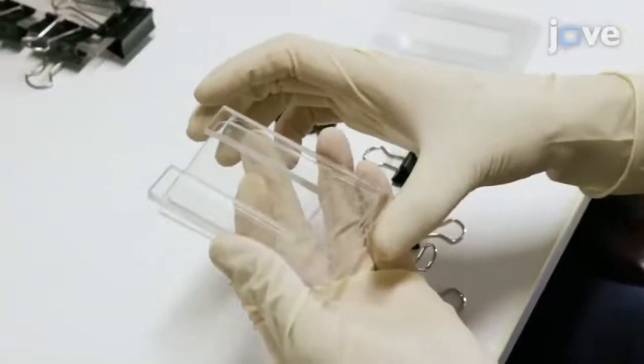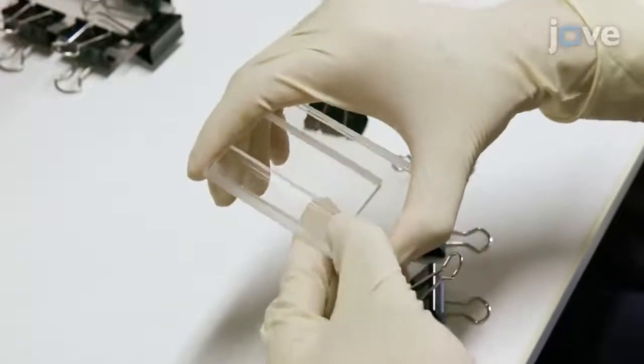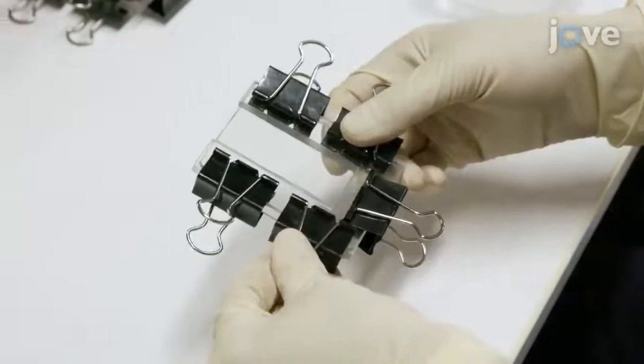Construct the dermal phantom mold similarly with a 5mm thick U-shaped acrylic plate between two 2mm thick plates. Fix these pieces with clips.